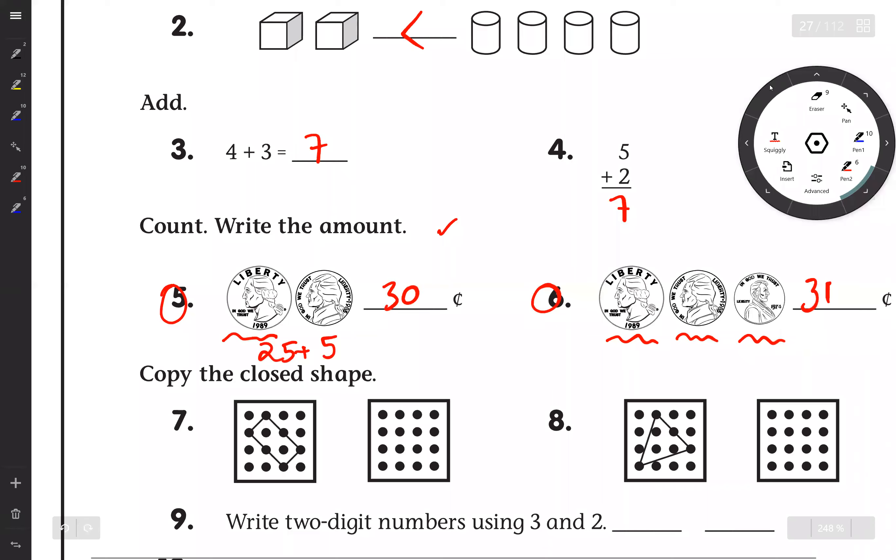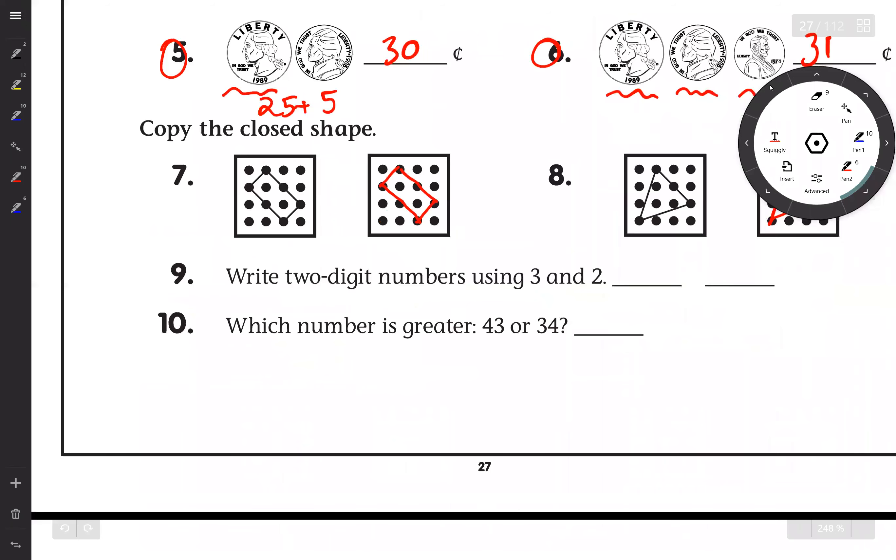Copy the closed shape. Yes, and just copy this. Okay, yes. Number 9, write two-digit numbers using 3 and 2, so the only options are 32 and 23.